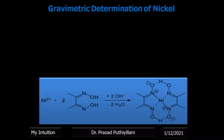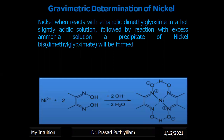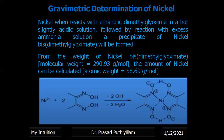Nickel reacts with glyoxime, or ethanolic dimethylglyoxime, in a hot, slightly acidic solution, followed by reaction with excess ammonia solution. A precipitate of nickel bis dimethylglyoximate will be formed. From the weight of nickel dimethylglyoximate,